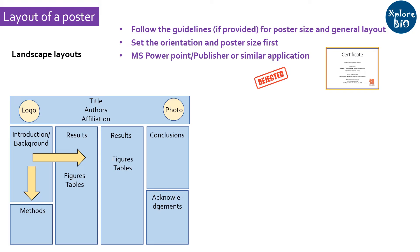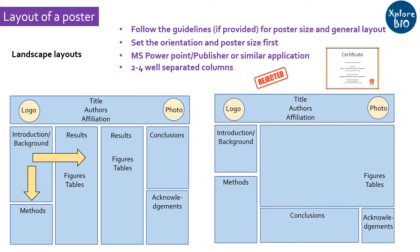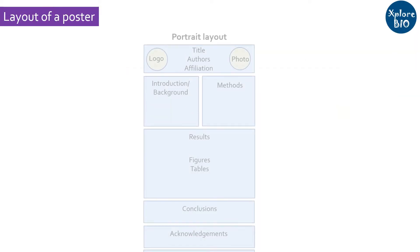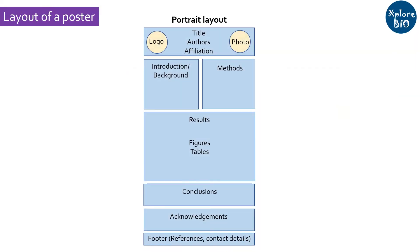Your whole poster should be partitioned into two to four well-separated columns. There is also a landscape layout where you can have a single large portion for results. The text you write should not be too wide, as it makes it difficult to read — instead, separate the text into narrow-width lines. A portrait layout is also an option if asked by the conference organizing committee; all sections and headings remain the same. You can also make your own QR code linking to your lab page or research article for more details about the presented work.